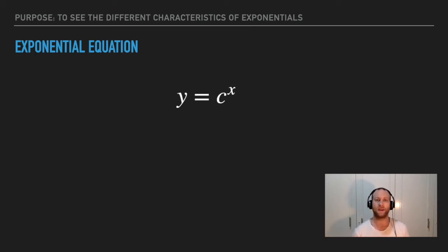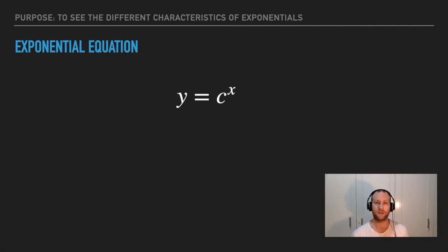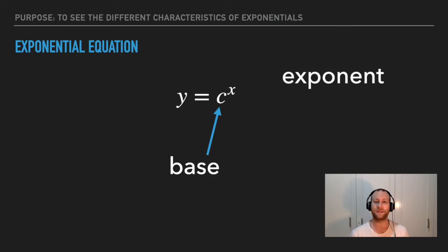The generic form of an exponential equation is y equals c to the power of x. You may also see this written with a b instead of c. We're continuing to use c for the base to avoid confusion with b, which was used for horizontal expansion and compression in the last unit. Here, c is the base and x is the exponent.